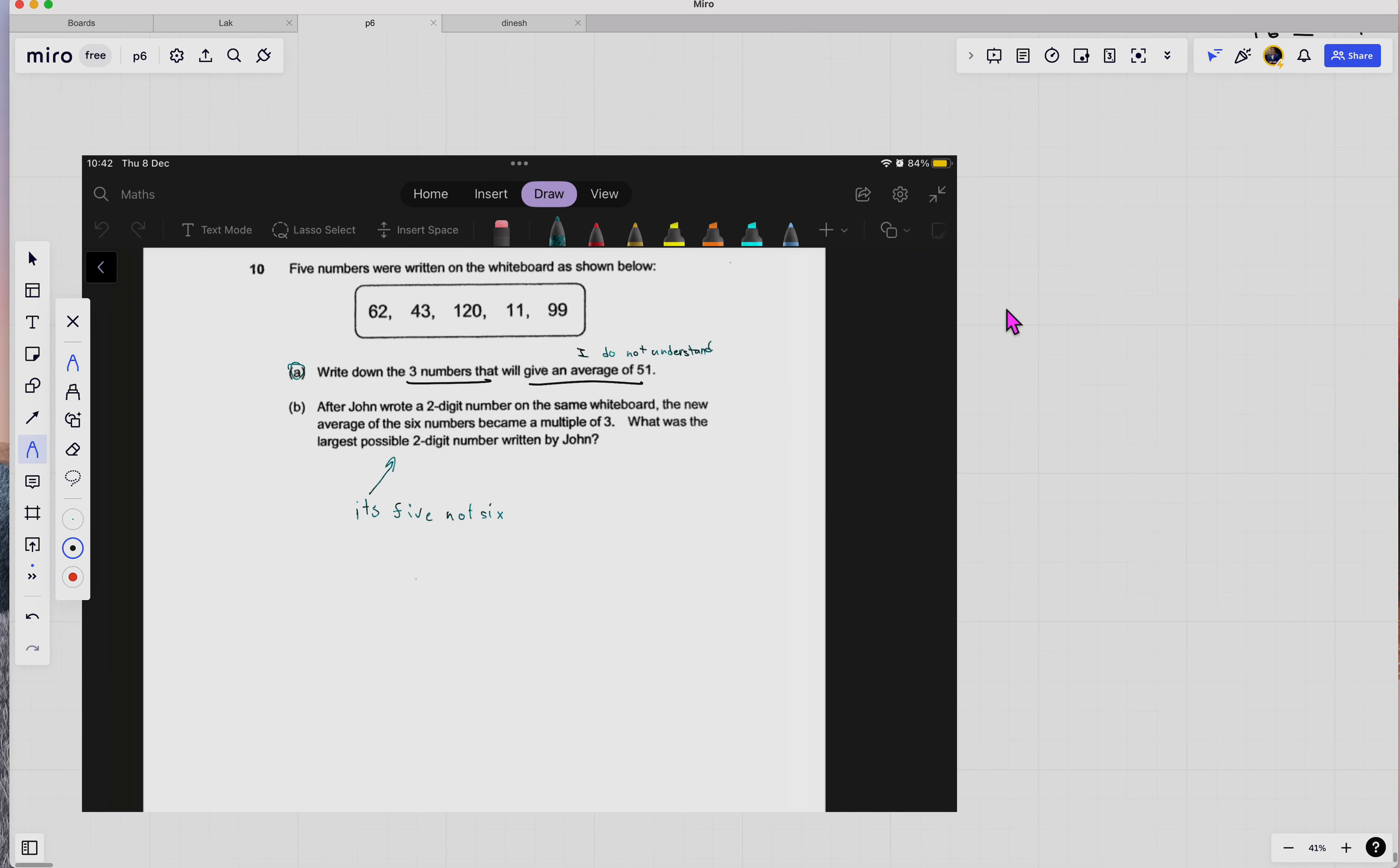Three numbers of 51, so 51 times 3, you find out what's the total first. Then you will pick three numbers out of this that will give you 153. So which three numbers out of five will give you 153?